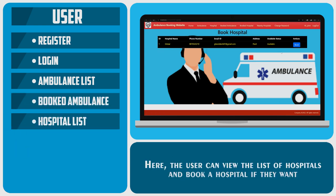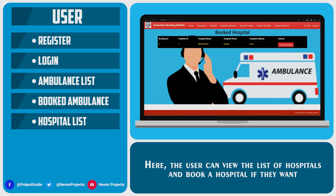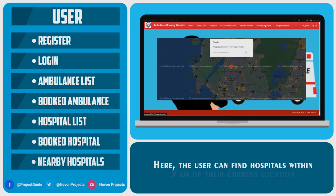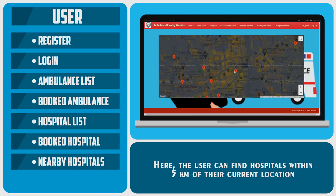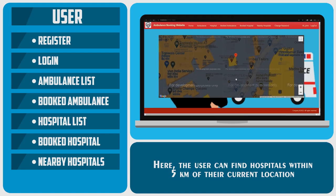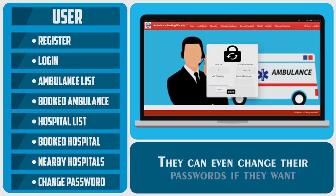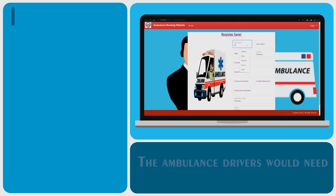Here the user can view the list of hospitals and book a hospital if they want. They can view the hospitals they have booked. The user can also find hospitals within 5 km of their current location, and they can even change their password if they want.